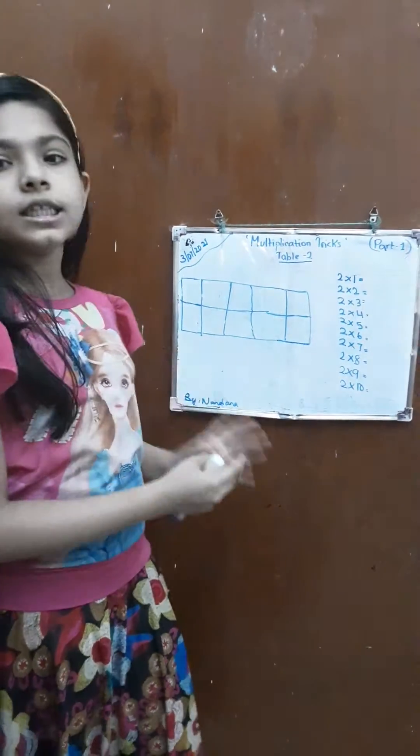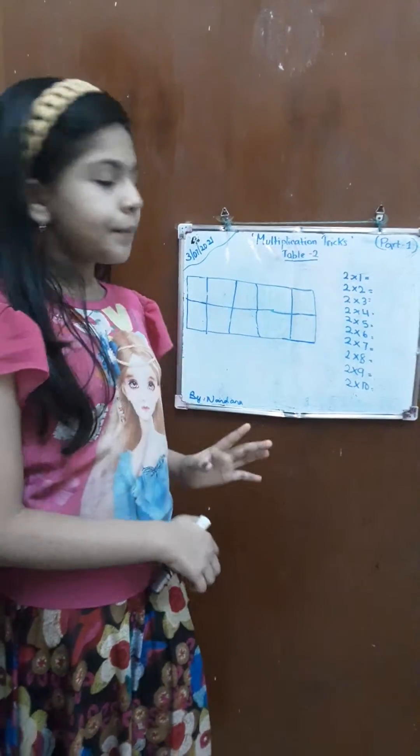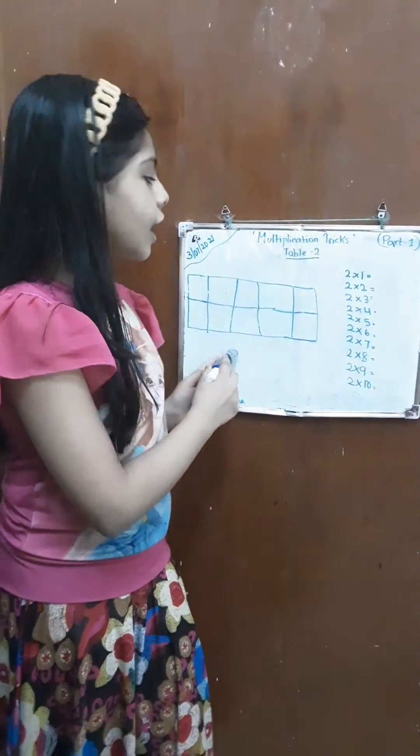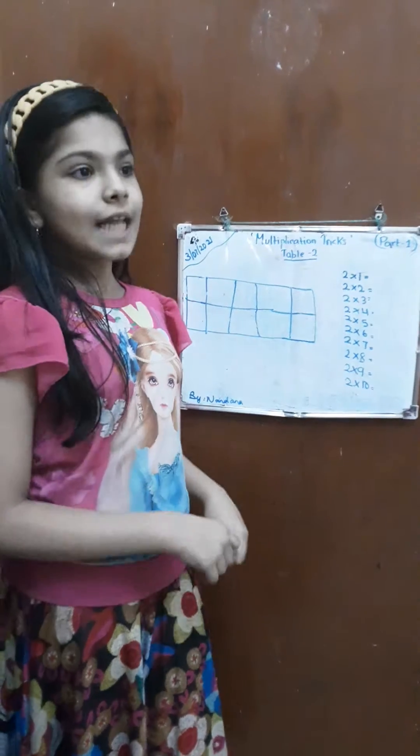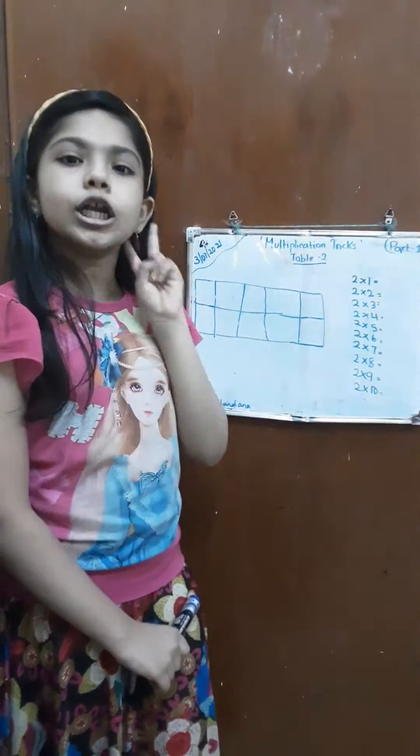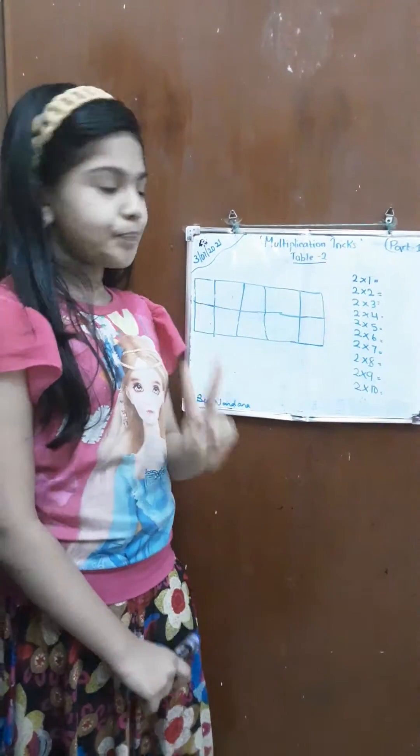The starting step is to draw a 5 by 2 grid — that means 5 columns and 2 rows.